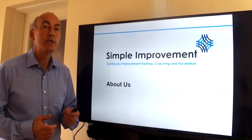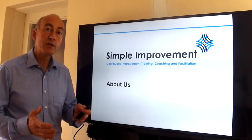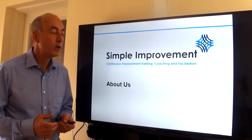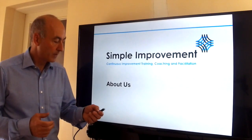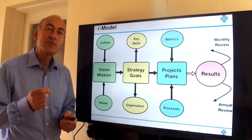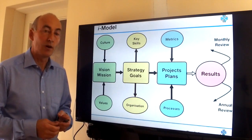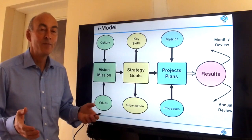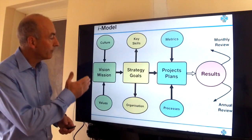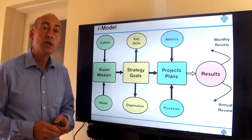I thought I might do that by applying one of the models that we use within organizations to help them build a bespoke program. It's called the I Model — the I is for improvement — but this very quickly got called the insect model. I'm going to work through each of the four segments and talk about all of the elements of this model.